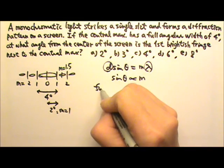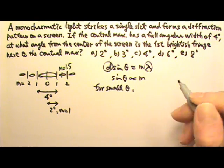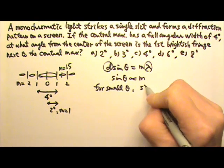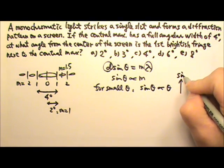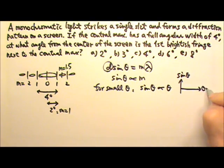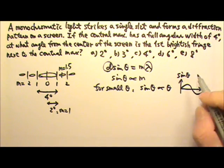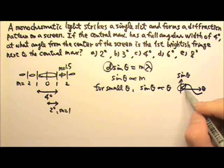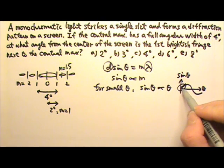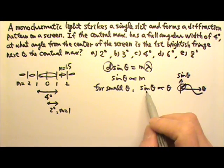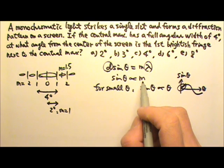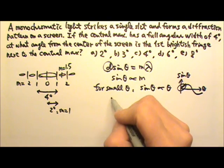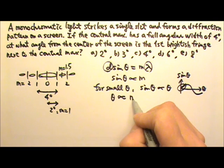Now for small angles, we know that sine theta would be proportional to theta. Because if I plot the sine graph, we get a graph that's like this. When the angle is small, this part here is like a straight line. So it's linear. That means for small angles, sine theta would be proportional to theta. Since sine theta is proportional to M, the order number, that means theta would be proportional to M, the order number.